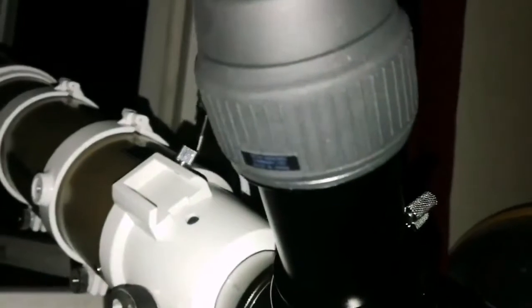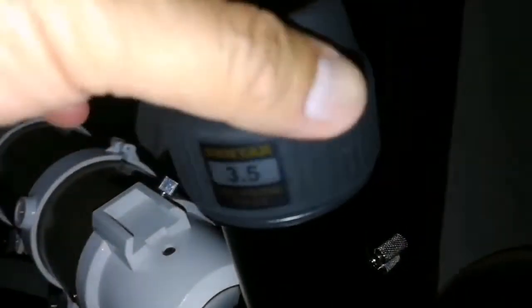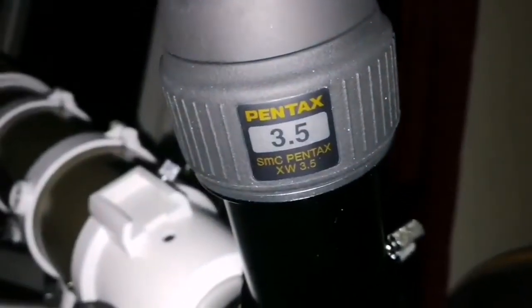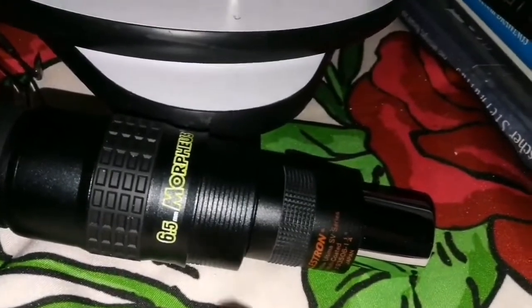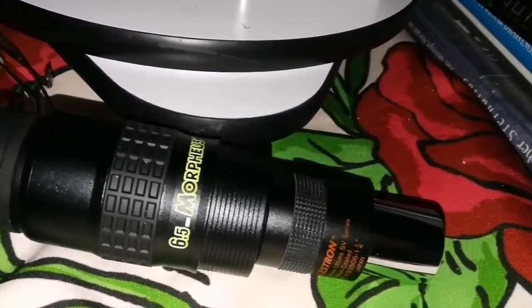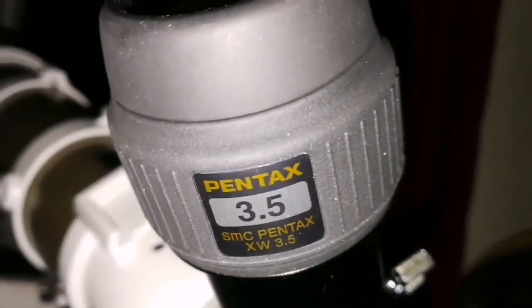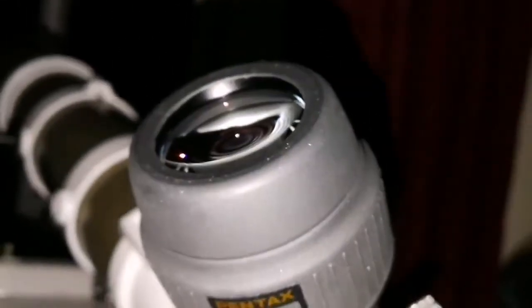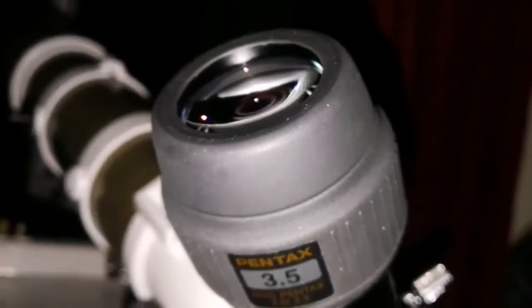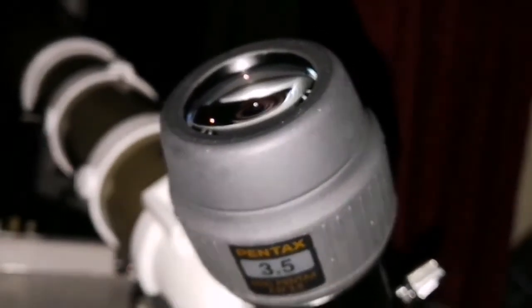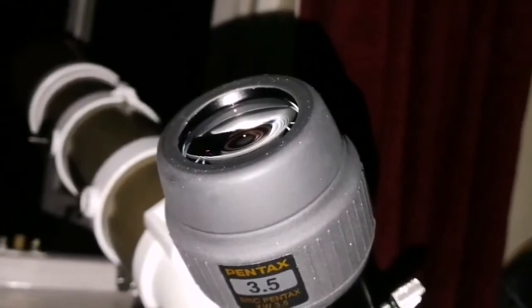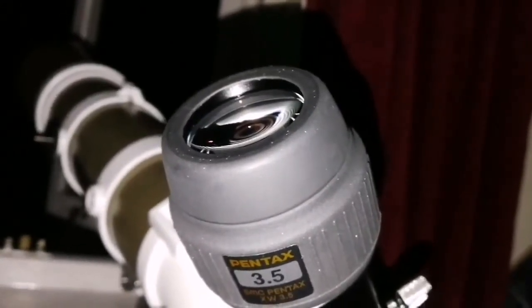Now I'm using the Pentax XW 3.5mm and it's not sharper than the Barlow to Baader Morpheus 6.5mm, that is 3.25mm. So this one is slightly sharper. You can see more detail in the atmosphere of Jupiter and the dot which is very visible.